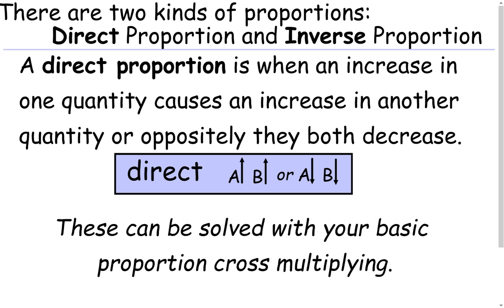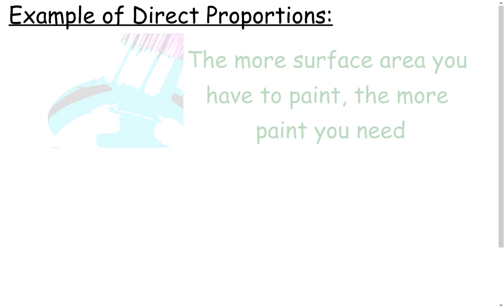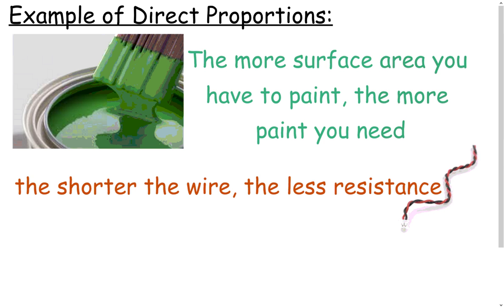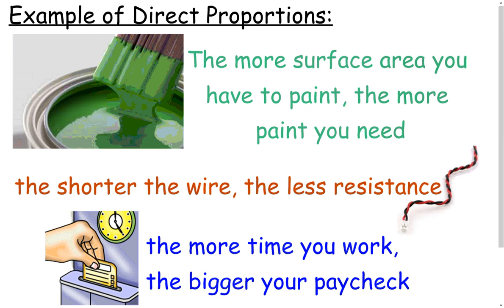These types of proportions can be solved with your basic cross-multiplying. Here are some examples of direct proportions: the more surface area you have to paint, the more paint you need; the shorter the wire, the less resistance; and the more time you work, the bigger your paycheck.